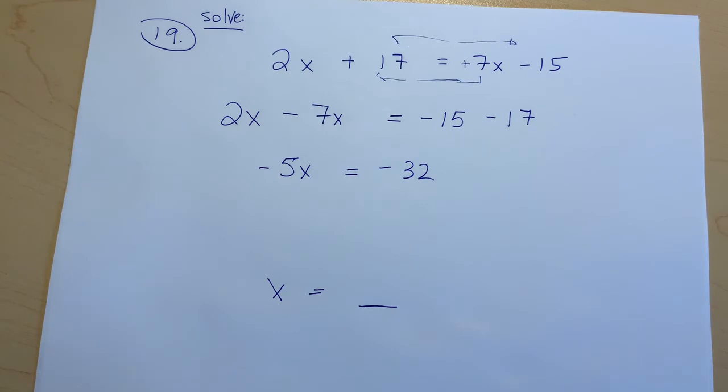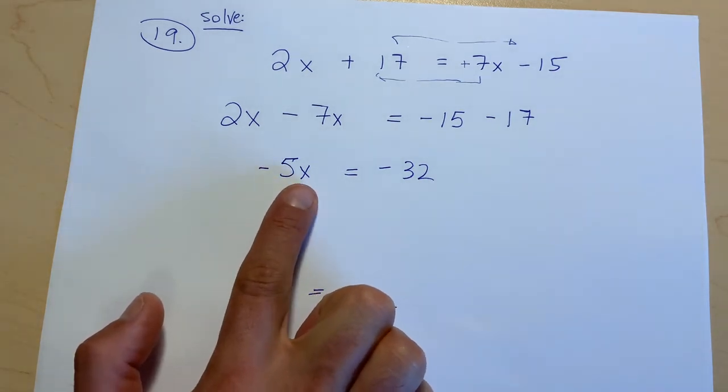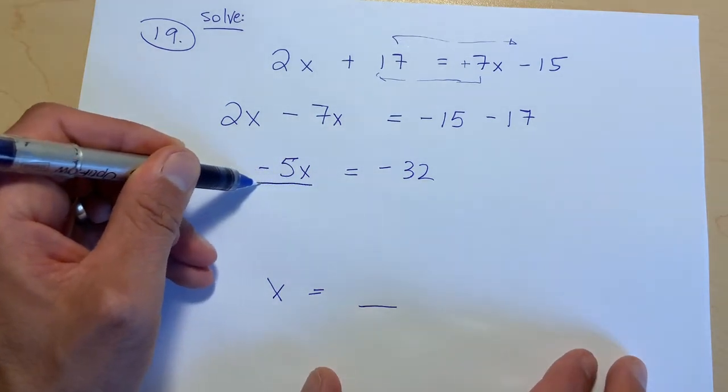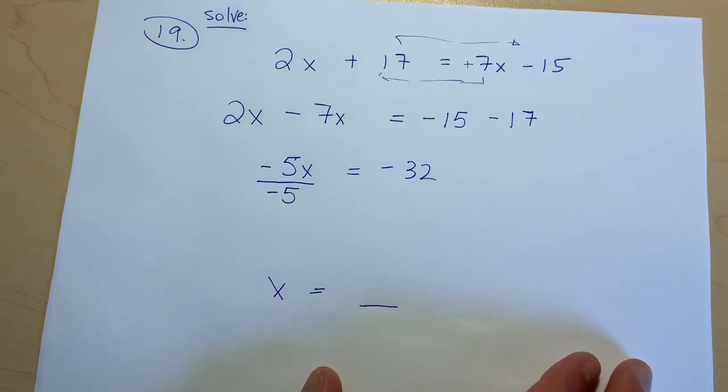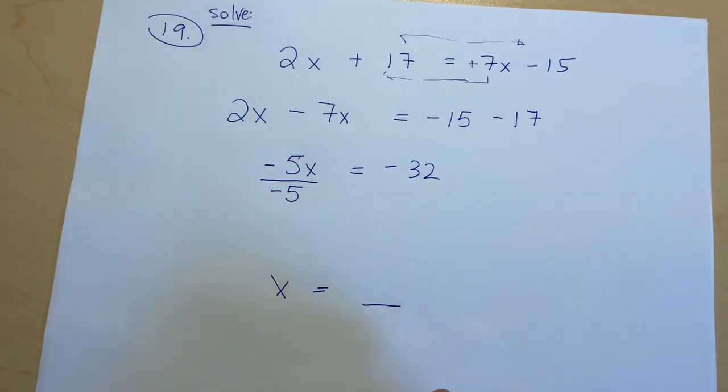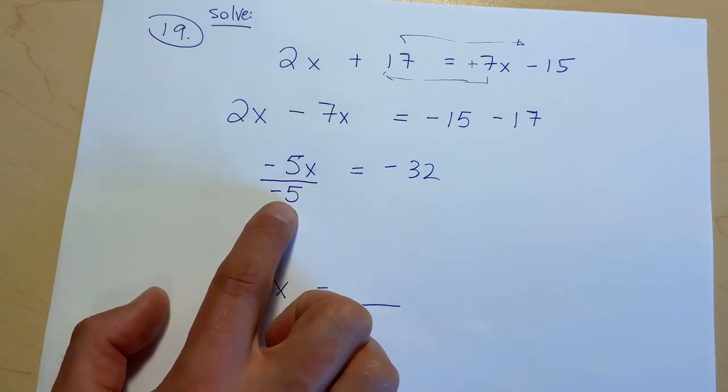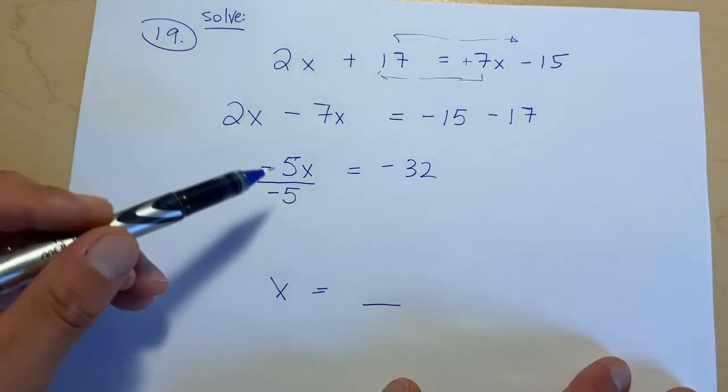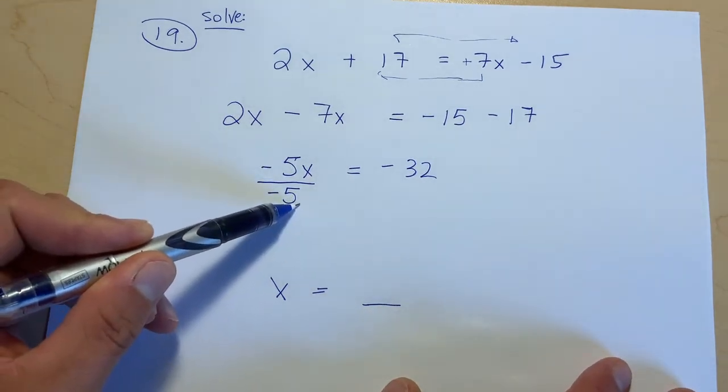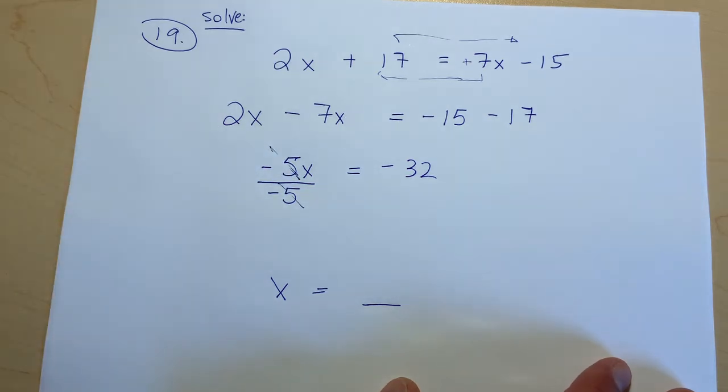So instead of saying negative 5 times x, we're going to do the opposite. We're going to divide by negative 5. So that makes like opposing forces, right? Times negative 5 and then divide by negative 5, it kind of neutralizes everything. So really these 5s, like the influence of them or the power of them, kind of cancel each other out, right, because they're opposing each other.